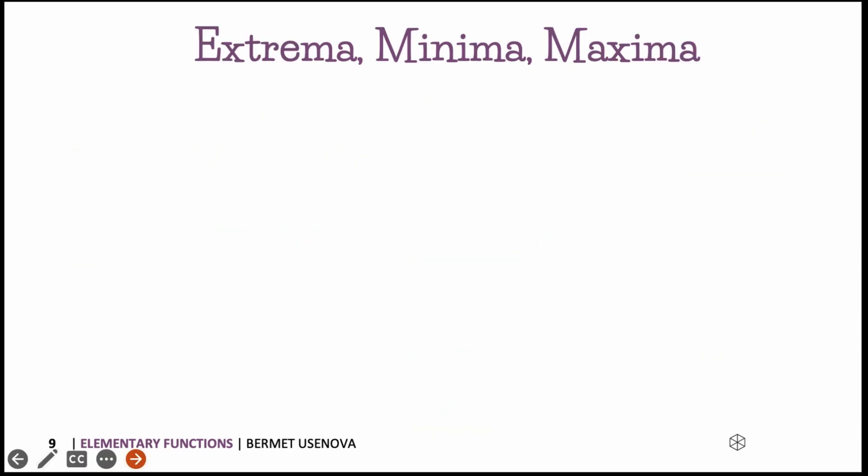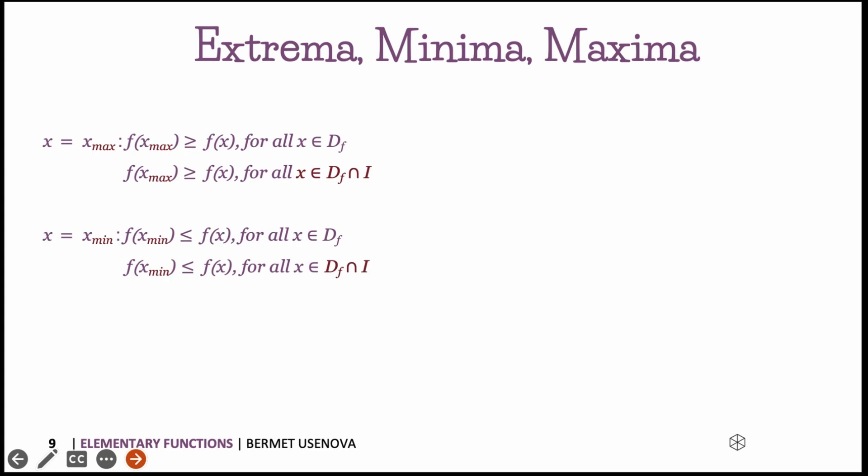The next property I want to remind you about is extrema — minima and maxima. A function f is said to have a global maximum if all values of the function are less than or equal to the value at that point x. Some functions have a global maximum and some do not — it depends on the type of function. The maximum is the maximum possible value of a function. Using standard notation, the global maxima and minima represent the largest and smallest values over the entire domain.